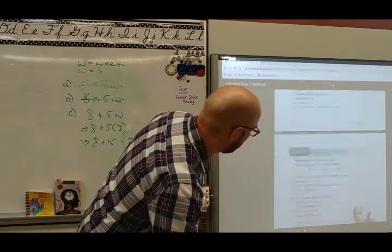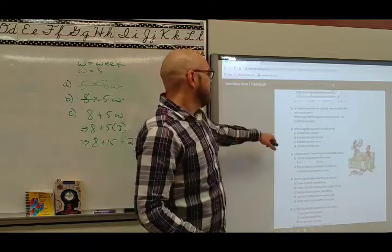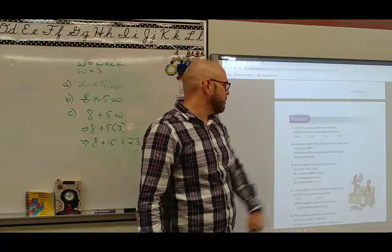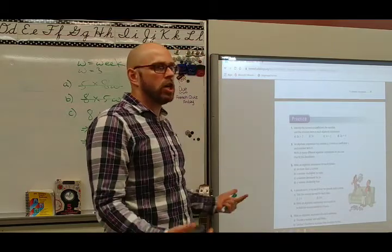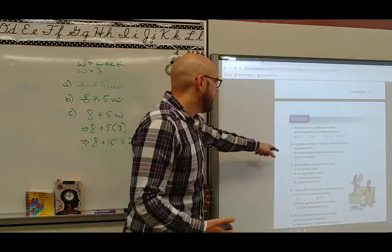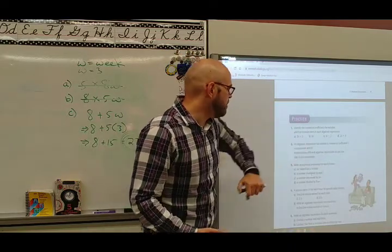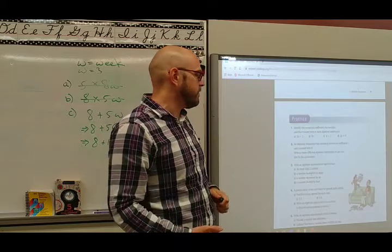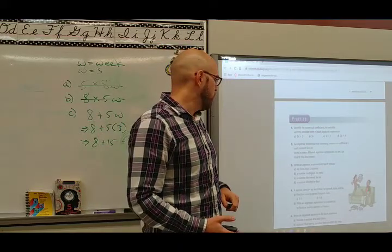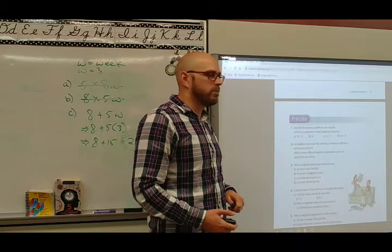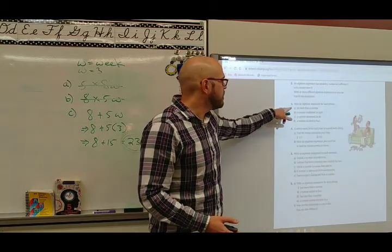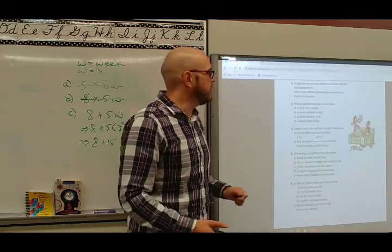Let's get on here. We've got... When we look at the questions in your text, we start off. It says, identify the numerical coefficient, the variable, and the constant term. Do we know how to do this? Yes, we do. An algebraic expression has a variable P, a numerical coefficient 7, and a constant term 9. Write as many different algebraic expressions as you can. You're going to have to think about this.